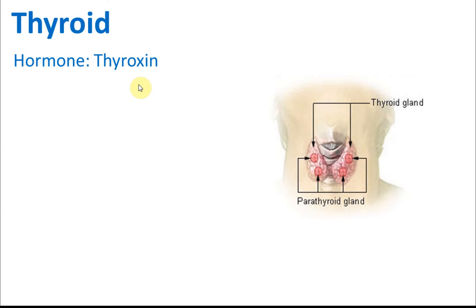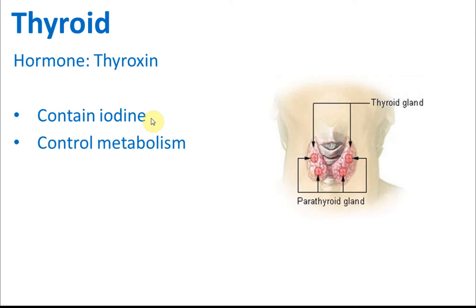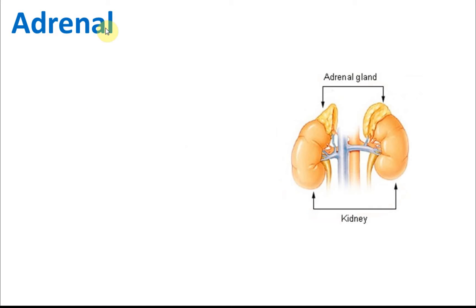The thyroid gland produces a hormone called thyroxine. It is located in the neck and it contains iodine. It controls the metabolism. If we don't have enough iodine in our body, we are going to have problems.